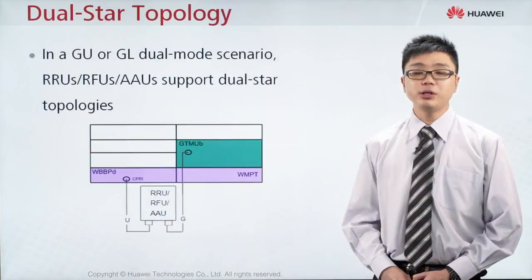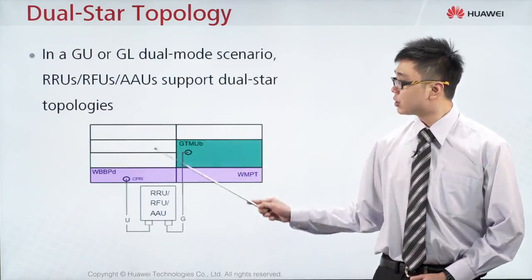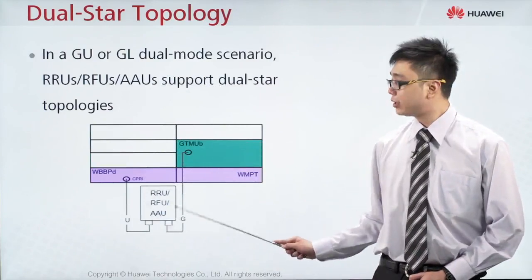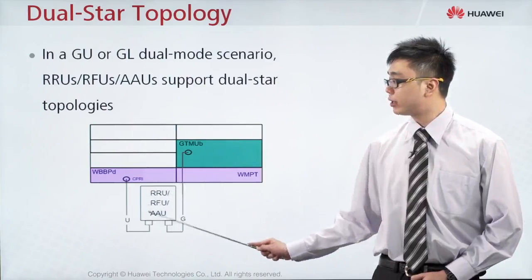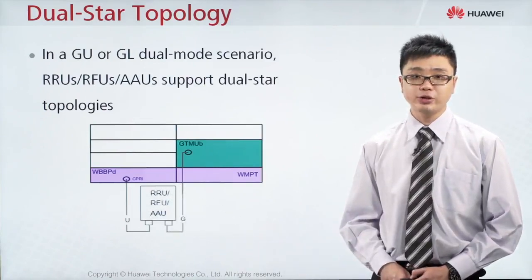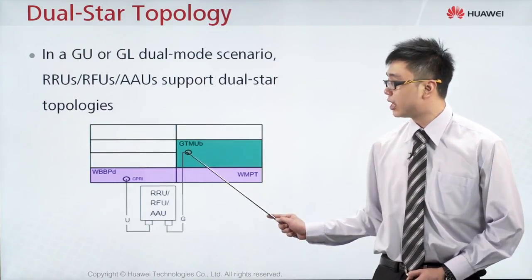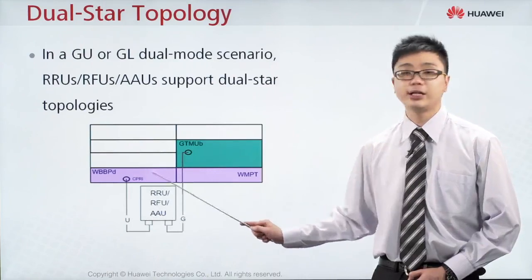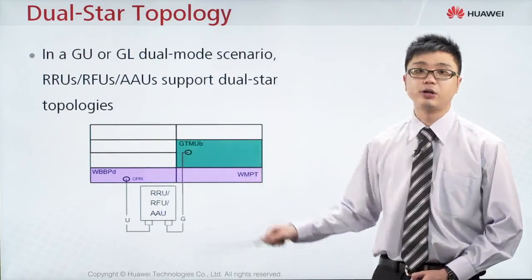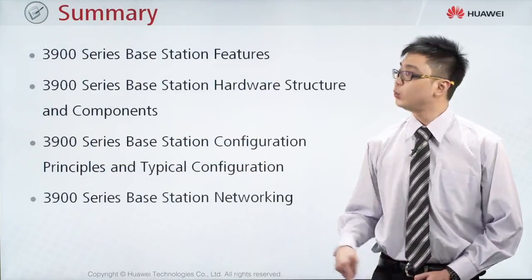The next type is dual star connection, which is only applicable when using MBTS where the RF supports more than one mode — for example, 2G and 3G. If they support both 2G and 3G together, the processing needs to connect to the 2G BBP board, which is the GTMU board, and also to the 3G WBBP board. This type of connection is known as dual star topology.